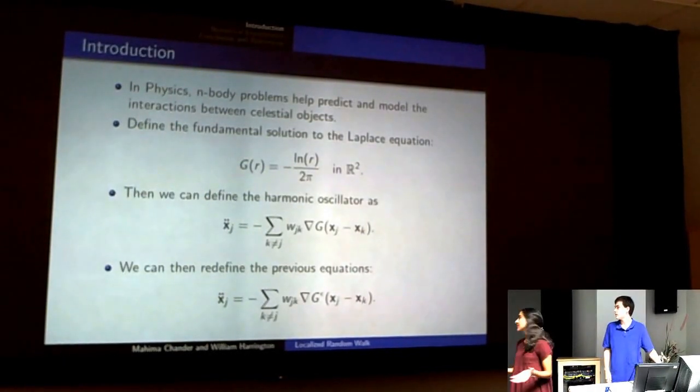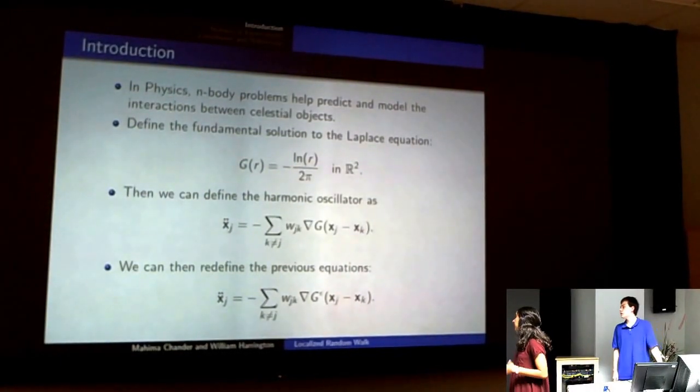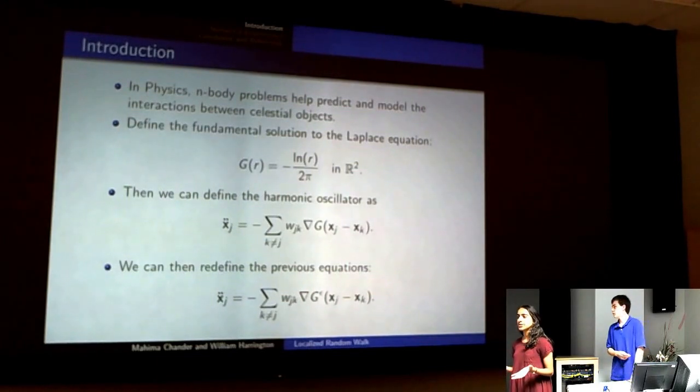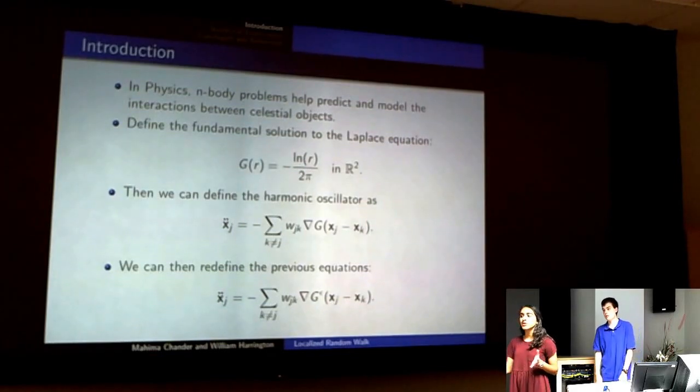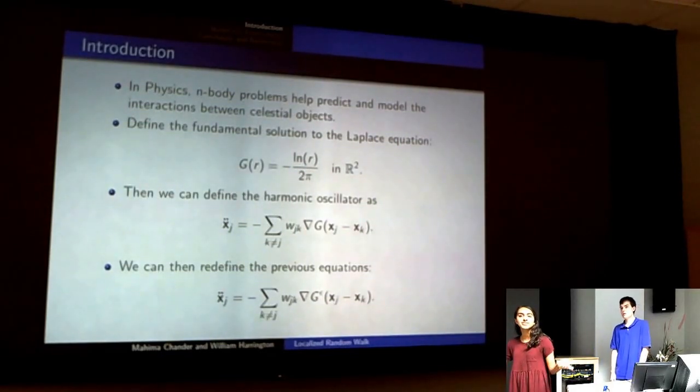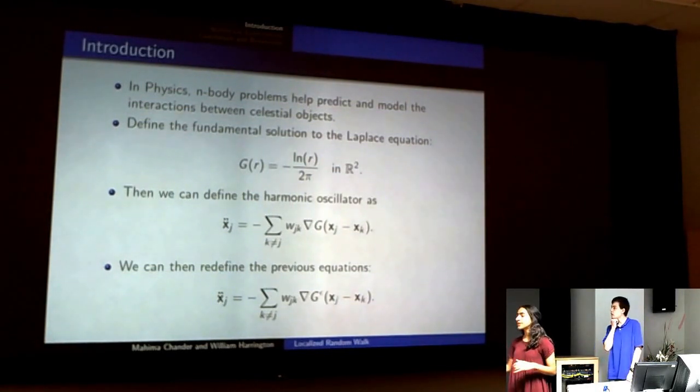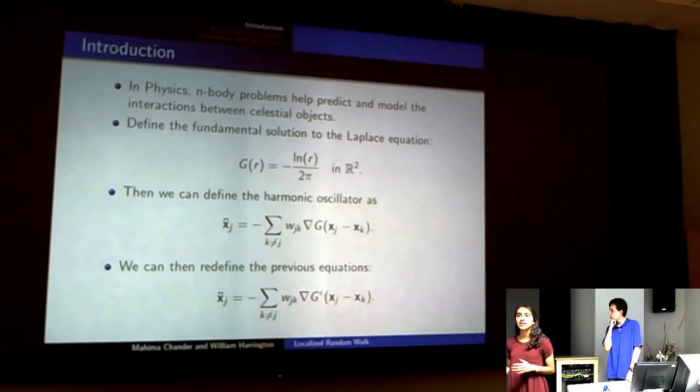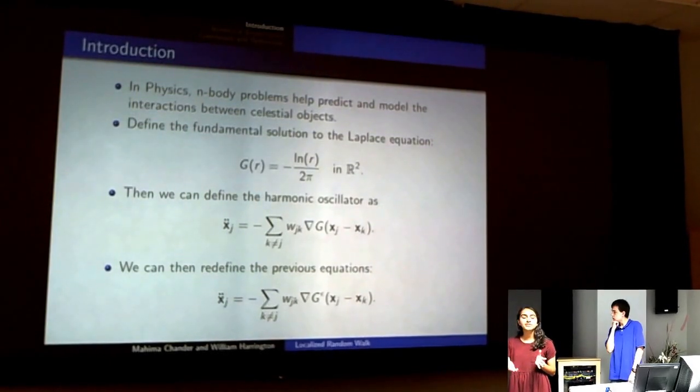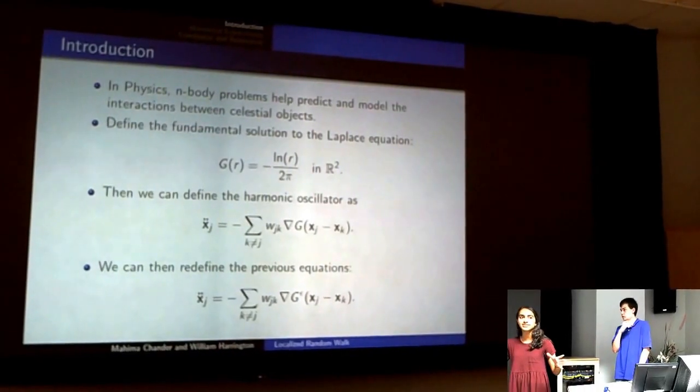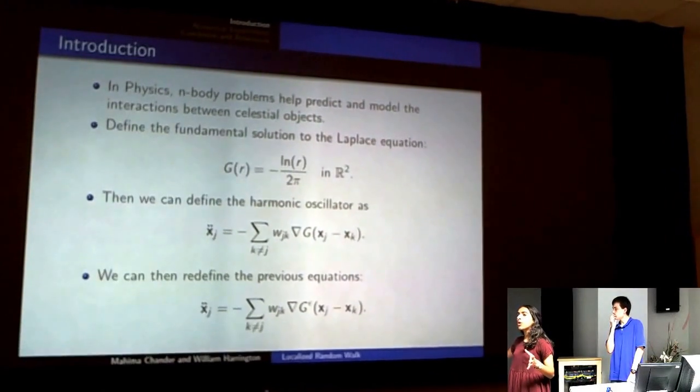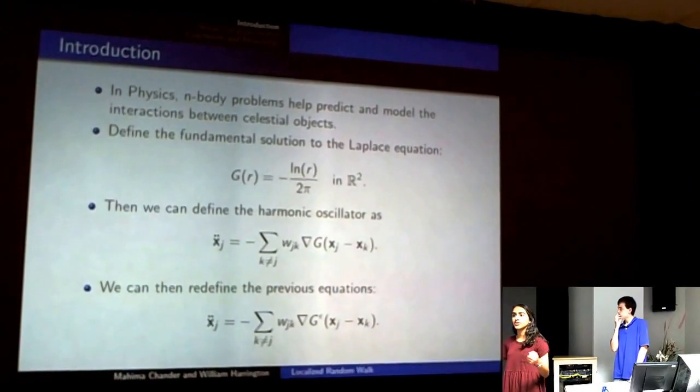In physics, n-body problems can be used to help predict and model the interactions between celestial objects. By researching these problems we gain a better understanding about the movements of the Earth, the Moon, the Sun, and other visible stars. Specifically the solution to Laplace's equation allows us to understand the gravitational and electrical fluids and how they move in space. We're also able to model how particles move around and their velocities.